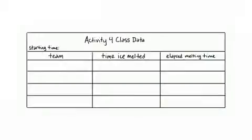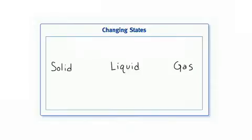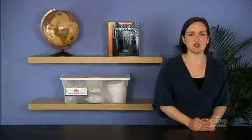To prepare for Session 2, draw a chart and label it Activity 4 Class Data Chart as shown in Figure 4-2. Place the chart where it can be left for use in later activities. Then, hang the Changing States chart where students can easily see it and where the chart can also be left throughout the course of the module.